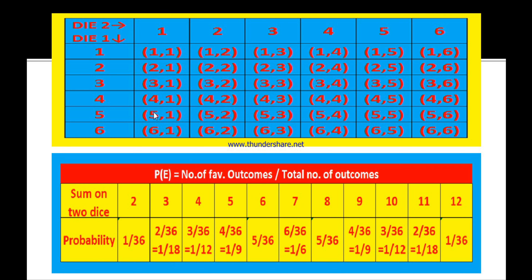To get sum 4, the possibilities are (3,1), (2,2), and (1,3) — that is 3 favorable outcomes. So the probability is 3 by 36, which simplifies to 1 by 12. To get sum 5, there are 4 favorable outcomes, giving 4 by 36, simplified to 1 by 9.